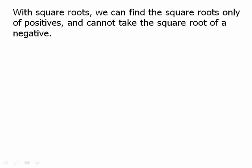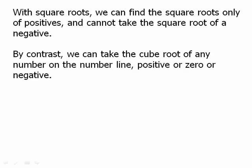With square roots, we can find the square root only of positives — we could also find the square root of 0, but we cannot take the square root of a negative. Just as we can't square something and get a negative, we can't take the square root of a negative. But the rules are very different for cube roots: we can take the cube root of any number on the number line — positive, 0, or negative.